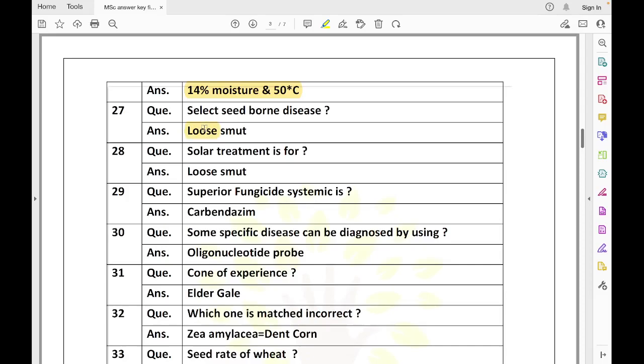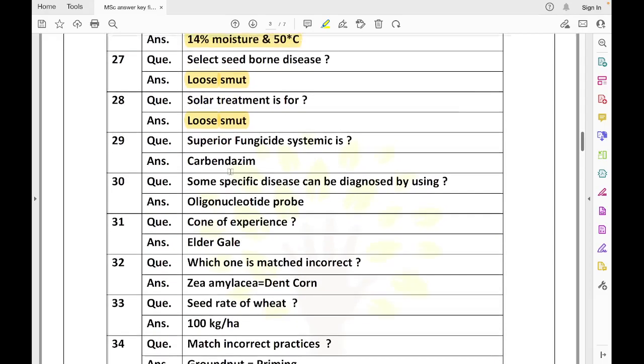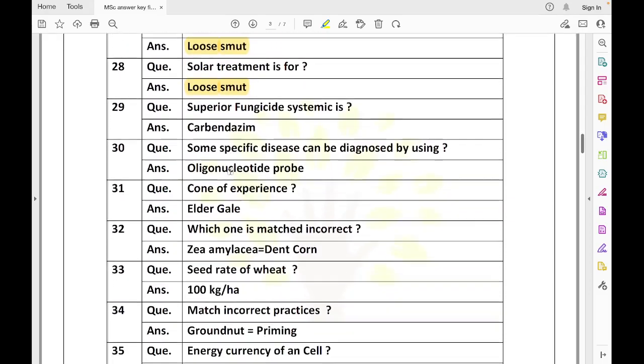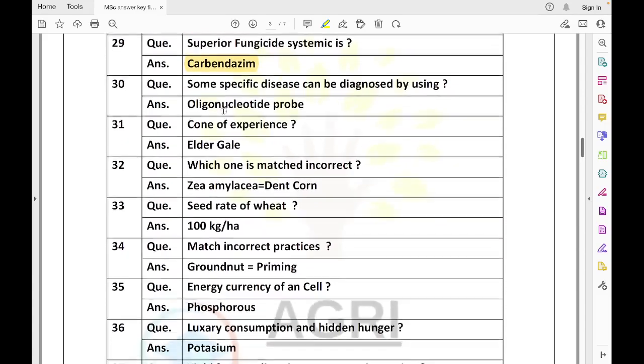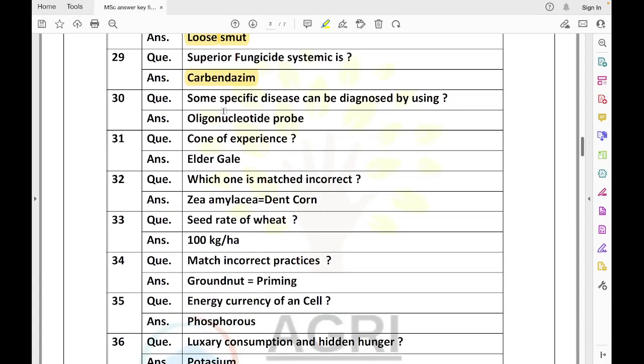Select the seed-borne disease - loose smut of wheat is a seed-borne disease. Next is solar treatment. Solar treatment was given by Luther and Suthar, also for loose smut. This is an internally seed-borne disease. Next question - which is a superior systemic fungicide? Bavistin or carbendazim, which is called a superior systemic fungicide.